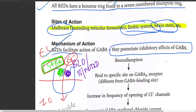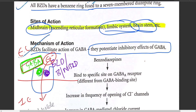Chloride ions, being anions, move from extracellular to intracellular. This accumulation of chloride leads to hyperpolarization, but only to a normal extent. When benzodiazepines are present, the intracellular chloride concentration increases beyond normal.